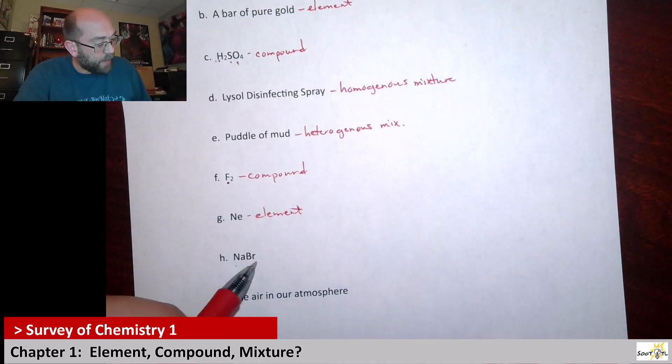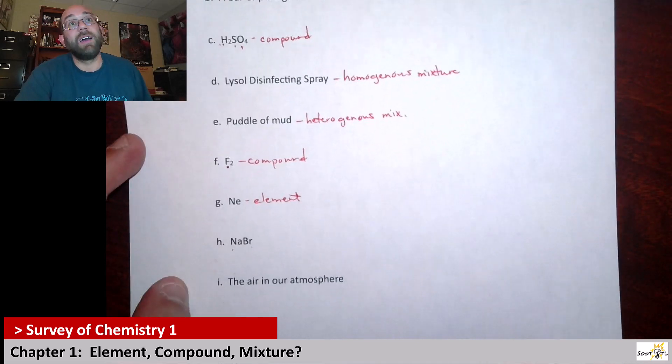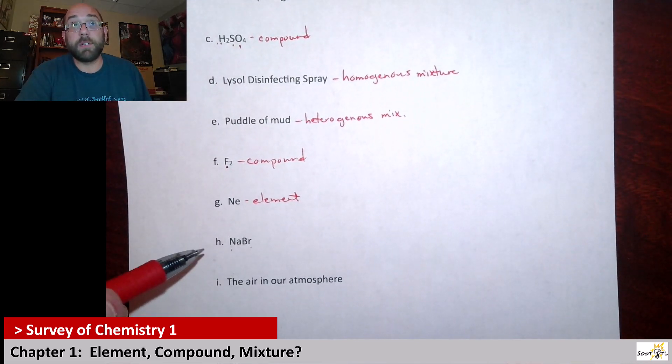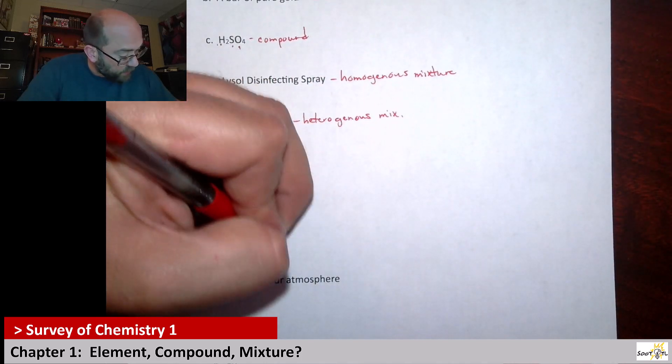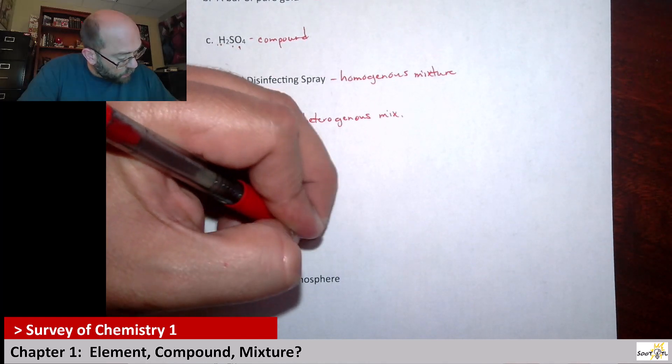Here we have NaBr, so sodium bromide. And for this, this is just a salt. But it's two separate elements present, so it's just like the H2SO4 before. We would definitely consider this a compound.